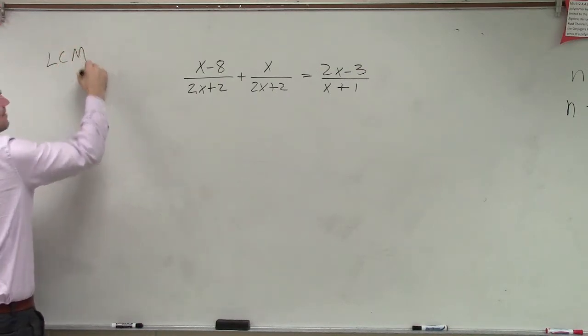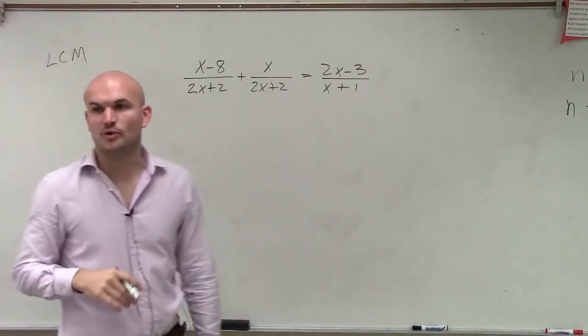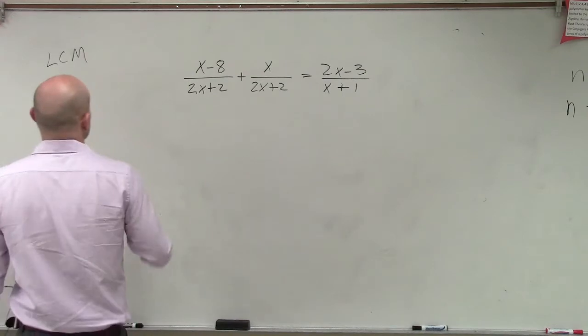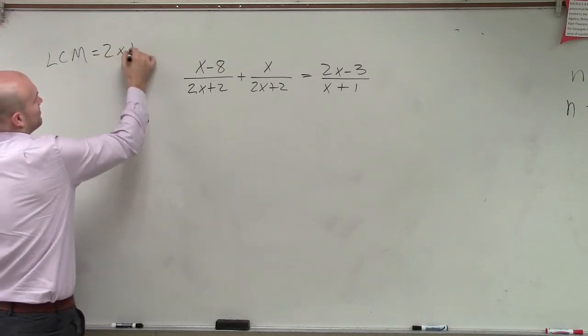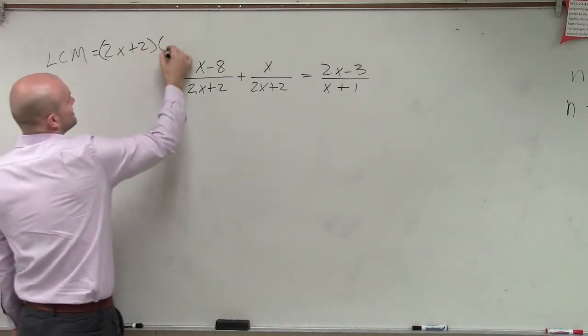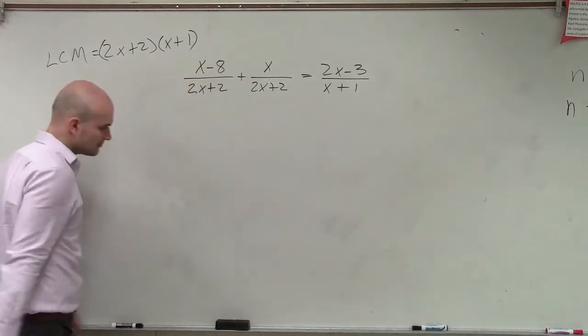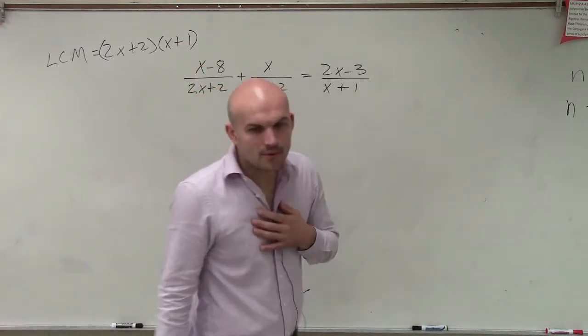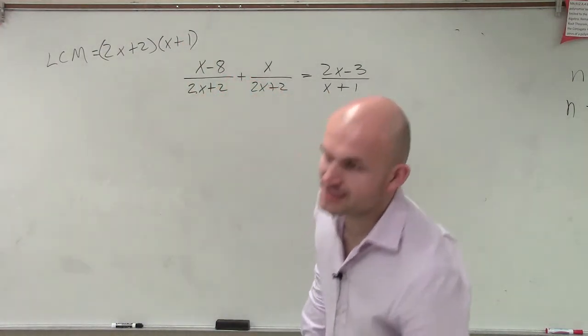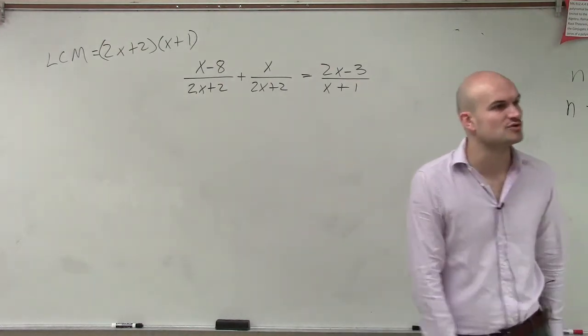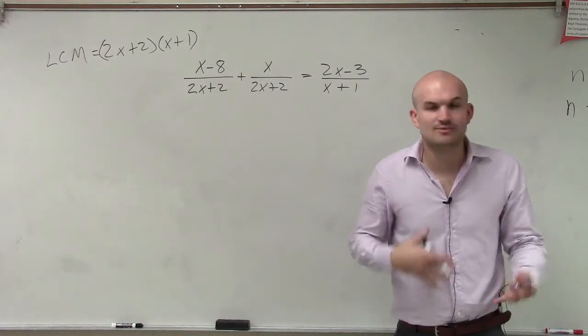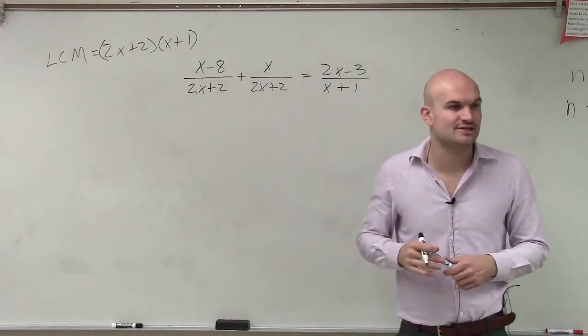So our least common denominator, or multiple of our denominators, is going to be 2x plus 2 and x plus 1. All right, now, when looking at this, remember guys, we don't need to include 2x plus 2 twice because it's redundant, right? So we just need to include the least amount that they need to share.